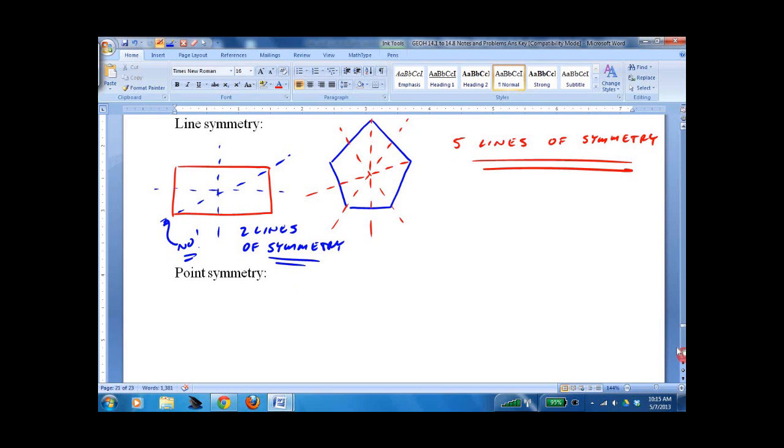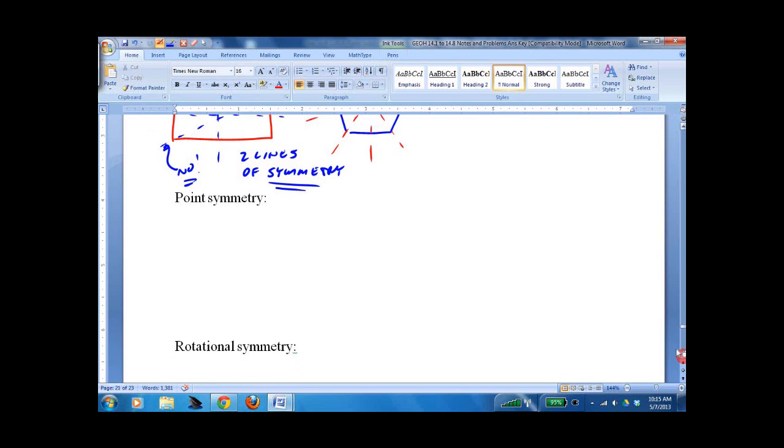So then we have things that have what we call point symmetry. That means 180 degrees, but just 180 degrees. It could have more symmetries, but not 120, not 100, that sort of thing for point symmetry. Point symmetry means it has at least 180 degrees symmetry.